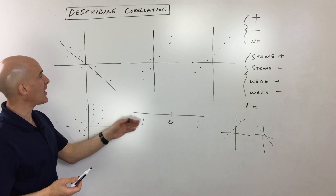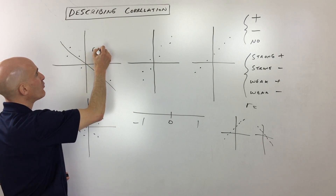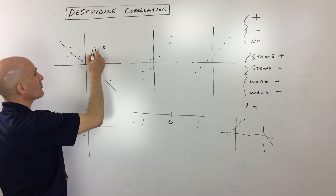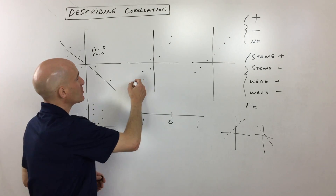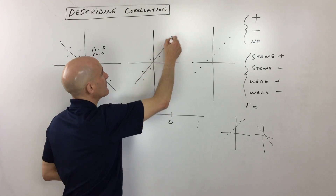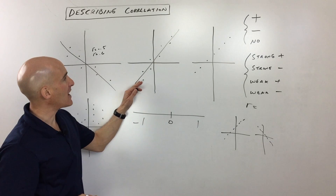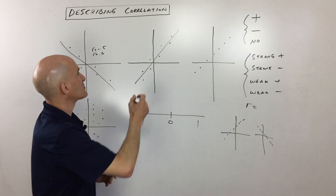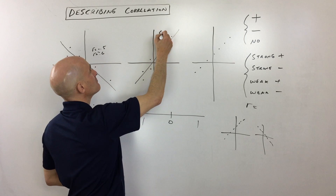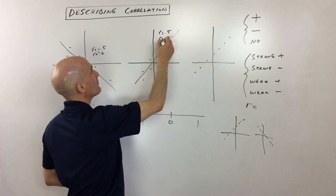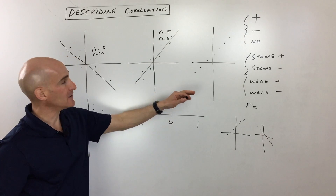This one here, you can definitely see it's trending up to the right — that's going to have a positive correlation coefficient, a positive r value. It's positive, but it's going to be like maybe a positive 0.5 or maybe a positive 0.6, just estimating.